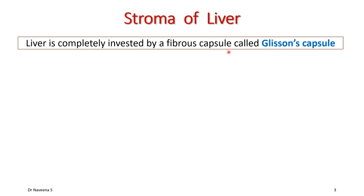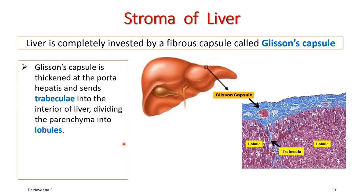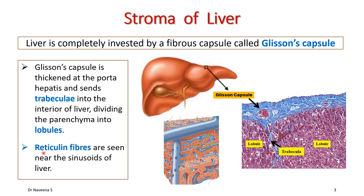The stroma forms a fibrous capsule around the liver known as Glisson's capsule, which completely invests the liver. Around the porta hepatis, Glisson's capsule thickens and sends trabeculae into the parenchyma, dividing it into lobules. Within the lobules, type 3 collagen fibers known as reticulin fibers are seen around the sinusoids. So stroma forms the fibrous capsule, trabeculae, and reticulin fibers.